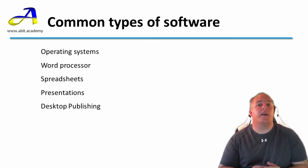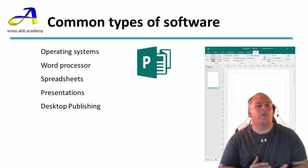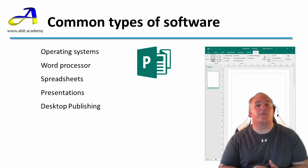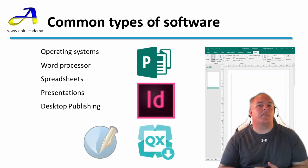Desktop publishing software is used to create printed page layouts — this could be a poster or to lay out a complete glossy magazine. In this category we have Microsoft Publisher. Most modern word processing applications have some level of desktop publishing ability; it comes down to what you are creating as to which one would be more suited to the task. A glossy magazine layout would be easier in a desktop publisher, but if you want to include a few pictures to emphasise a point in an essay, a word processor will manage this fine. Other examples include Adobe InDesign, QuarkXPress and Scribus.